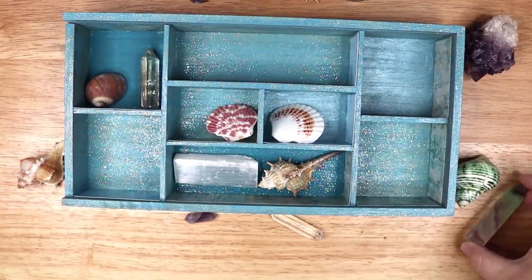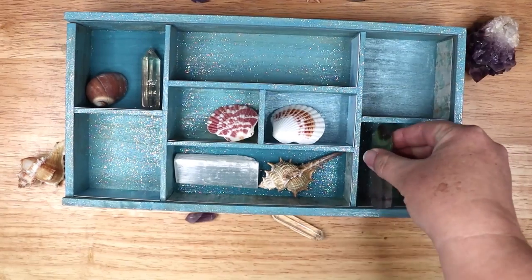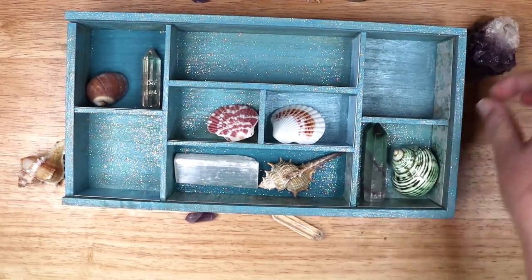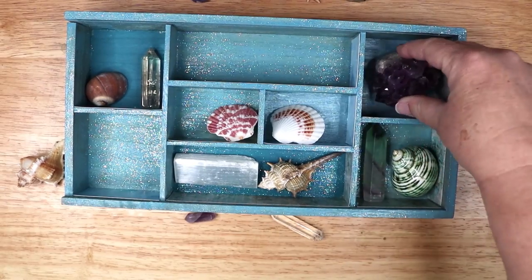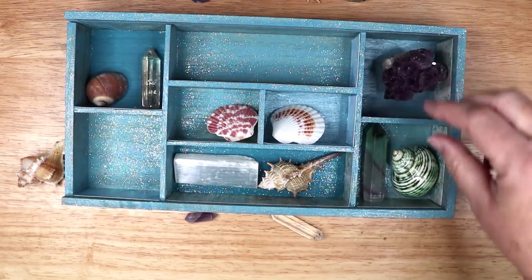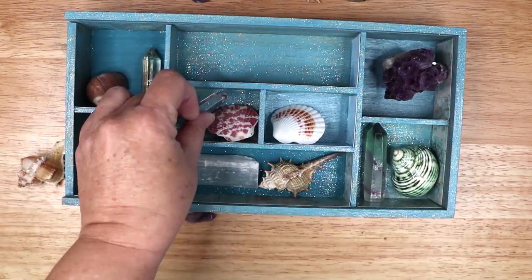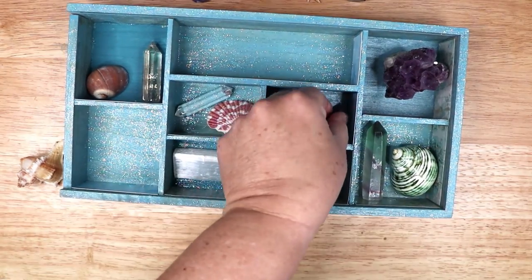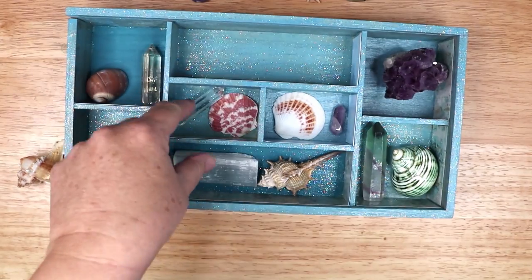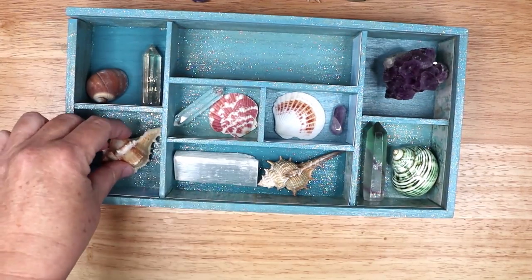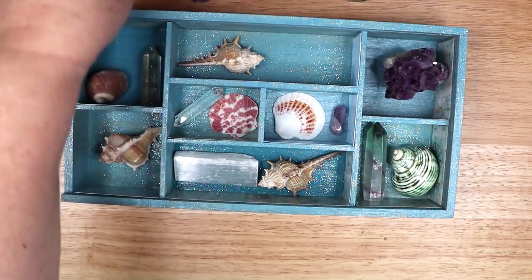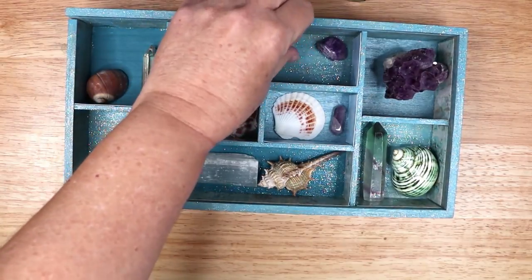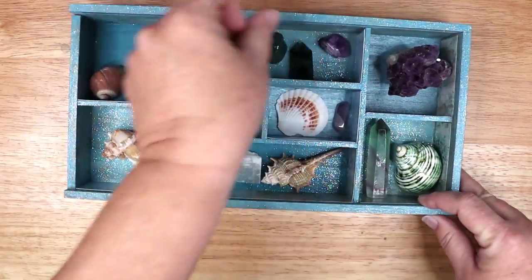Once the shadow box is completely dry, it is time to fill it with all of my treasures. I add some fluorite and some amethyst crystals. Both of these stones are associated with the water element. I also added lots of seashells and a piece of selenite. Selenite is formed when sulfate and calcium rich seawater evaporates, so it is literally made from the sea.